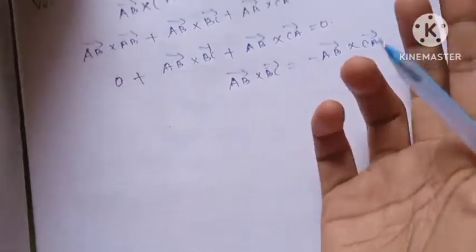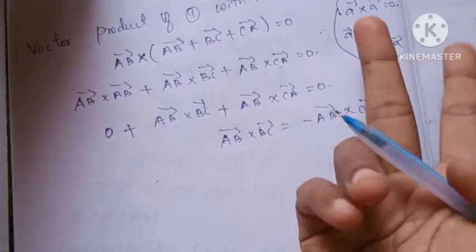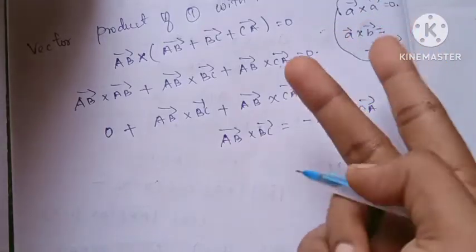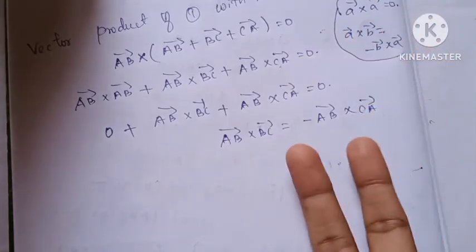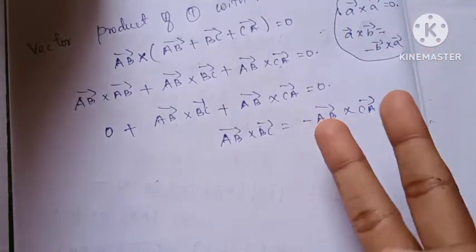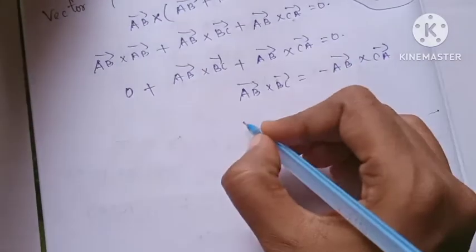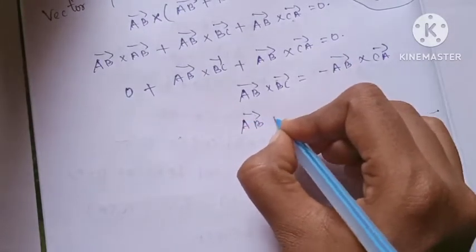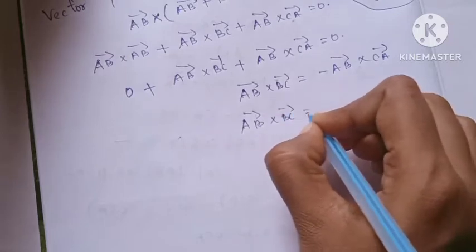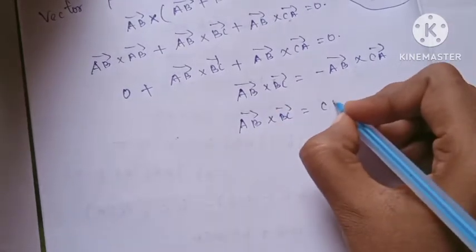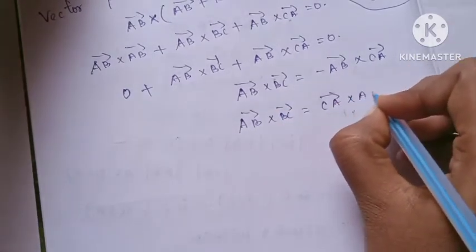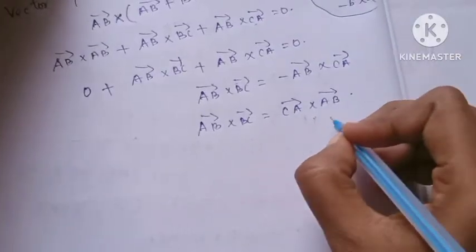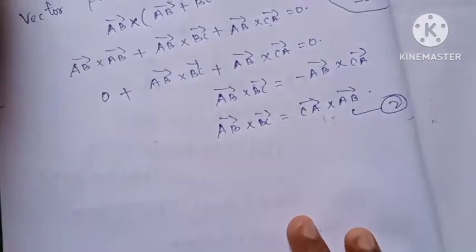So AB vector cross BC vector plus AB vector cross CA vector is equal to 0. Rearranging this term: AB vector cross BC vector is equal to minus AB vector cross CA vector. Removing the minus by reversing the order, AB vector cross BC vector is equal to CA vector cross AB vector. This is equation 2.